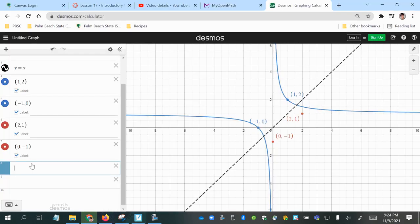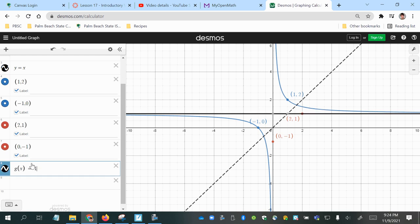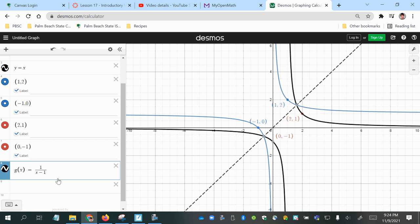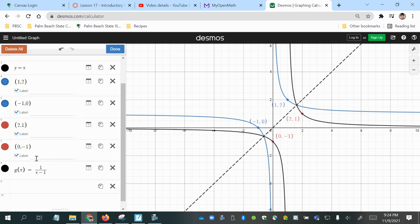1 over quantity x minus 1. So let's call this one g of x, 1 over x minus 1 quantity. And then we'll go ahead and make that red.